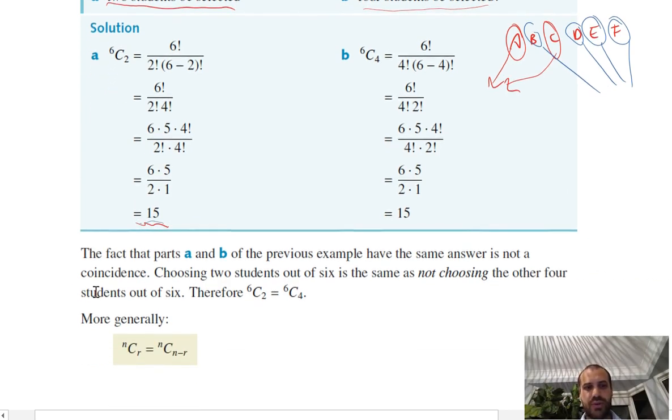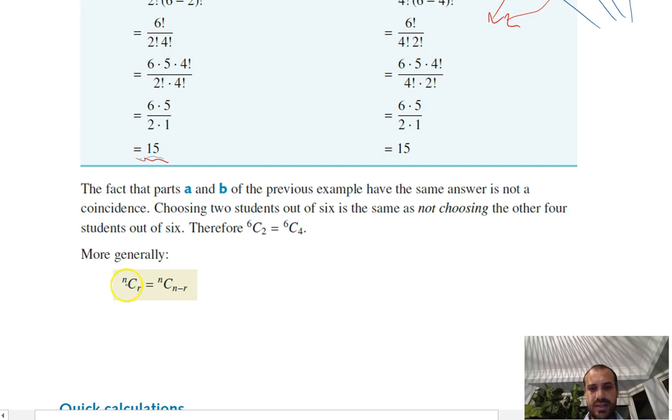More generally, we've got this neat little formula here that says that nCr is equal to nC n minus r. That can be really, really useful.